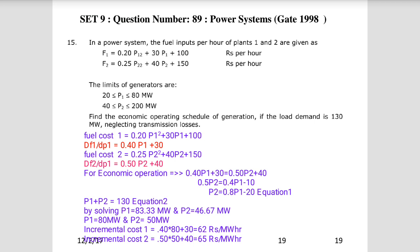To summarize Q9: given fuel cost functions F1 and F2, and generator limits P1 (20–80 MW) and P2 (40–200 MW), with load demand 130 MW, we find the incremental fuel costs dF1/dP1 and dF2/dP2, equate them for economic operation as equation 1, and use P1 + P2 = 130 as equation 2. Solving gives the economic operating schedule.